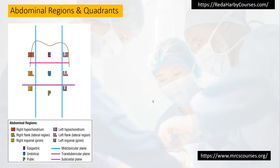The regions are nine. We have the right hypochondrium, the right flank, and the right inguinal or groin region. We have the epigastric, umbilical, and pubic or suprapubic region. We have also the left hypochondrium, left flank, and left inguinal region as well.